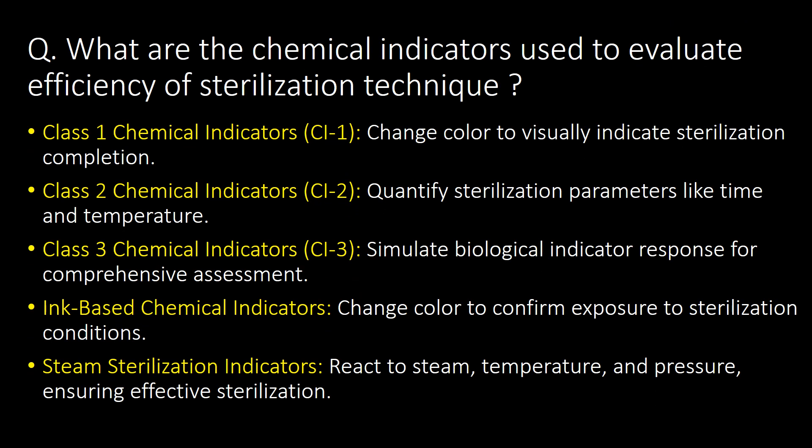What are the chemical indicators used to evaluate the efficiency of a sterilization technique? There are five types: Class 1 chemical indicators, Class 2 chemical indicators, Class 3 chemical indicators, ink-based chemical indicators, and steam sterilization indicators.